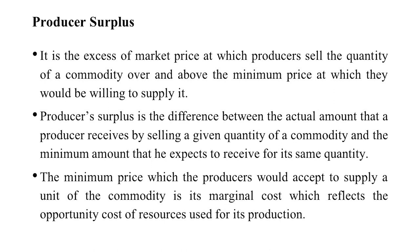This difference shows the producer surplus. The minimum price which the producer would accept to supply a unit of commodity is its marginal cost. It is basically the marginal cost of the producer which reflects the opportunity cost of resources used for its production. This definition shows how we calculate the producer surplus.